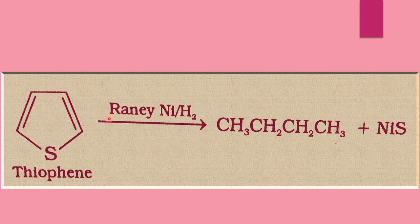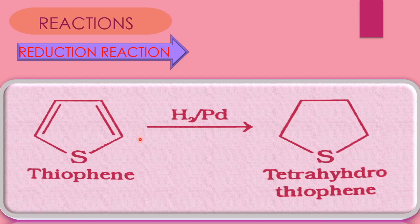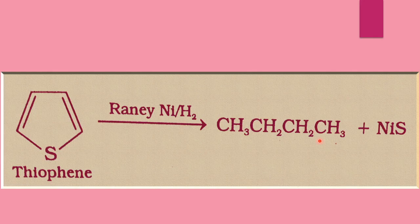In the next reaction, thiophene reacts with Raney nickel and hydrogen to form N-butane — CH₃CH₂CH₂CH₃. The cyclic ring compound is converted into a straight chain alkane in the presence of Raney nickel. There is addition of hydrogen here, but the ring changes into a straight chain. This is actually the reverse reaction: in the first reaction, N-butane to thiophene, and here thiophene to N-butane.